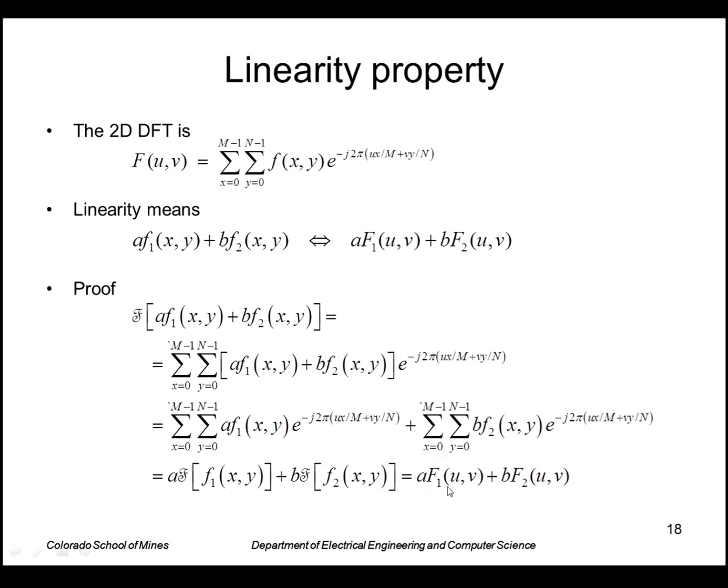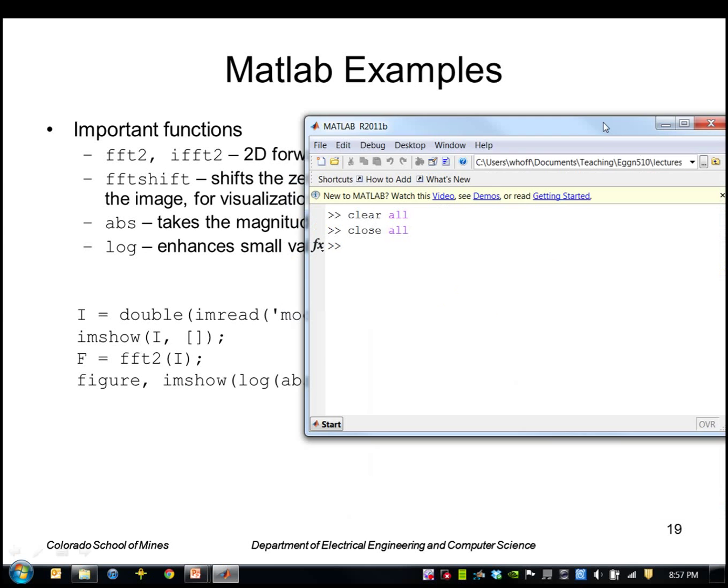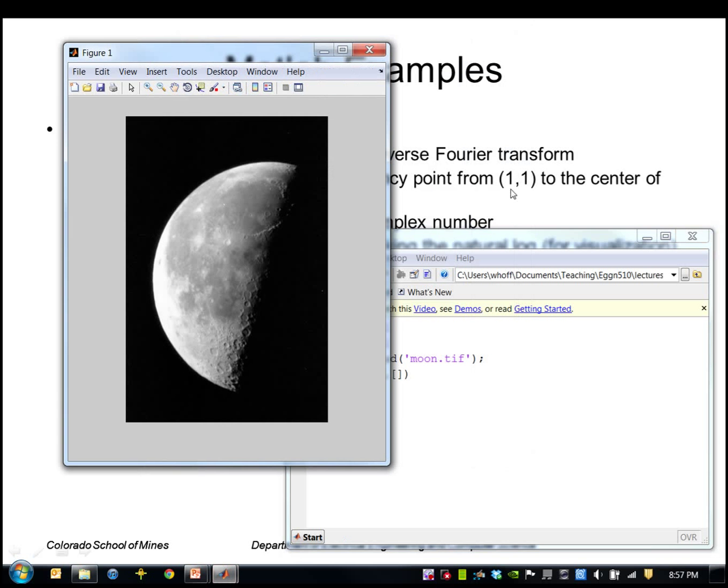Let's look at an example using MATLAB. MATLAB has a two-dimensional Fourier transform function called FFT2 and the inverse version IFFT2. So I'll go ahead and read in this image.